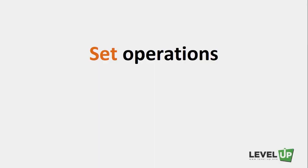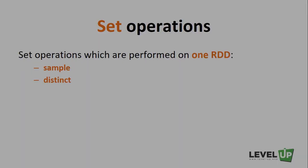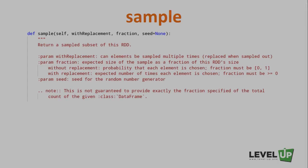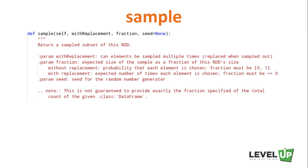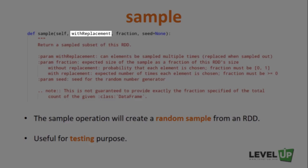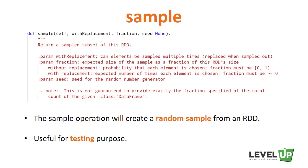In this lecture, we'll talk about another type of Spark transformation: set operations. RDDs support many mathematical set operations. Some are performed on a single RDD — the most popular are sample and distinct. The sample operation creates a random sample from an RDD and is quite useful for testing. The sample method takes three arguments: whether sampling is done with replacement, the sample size as a fraction (e.g., 0.1 for one-tenth), and a seed for generating random numbers.